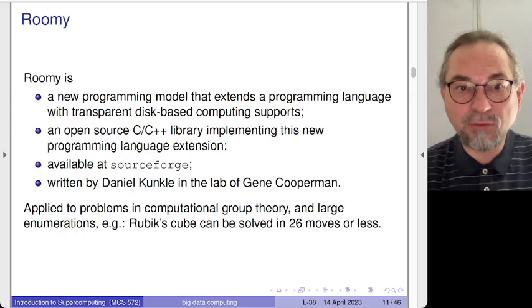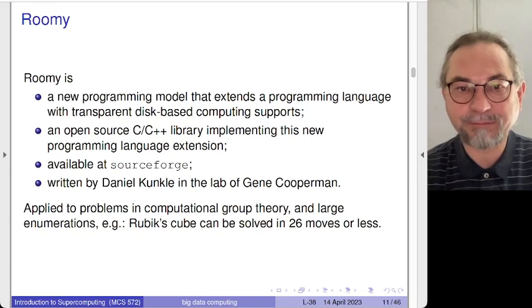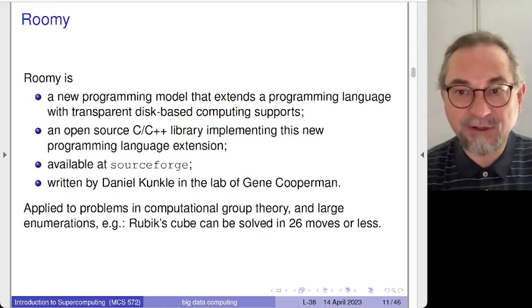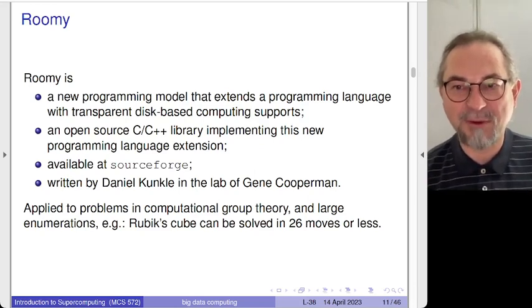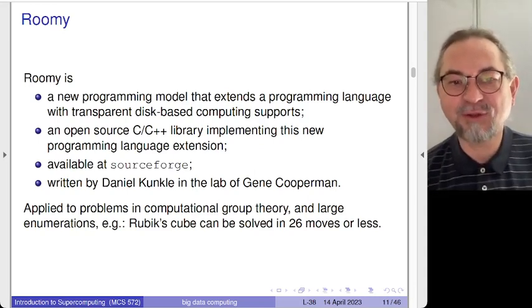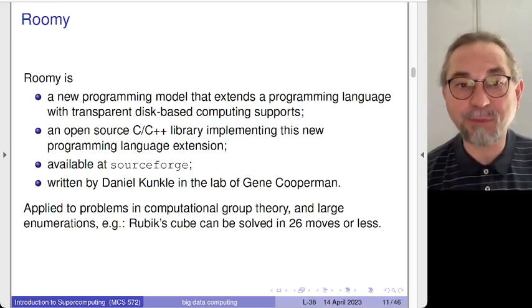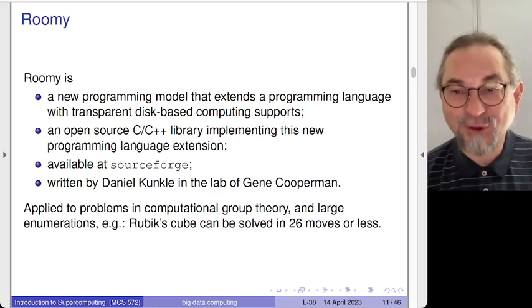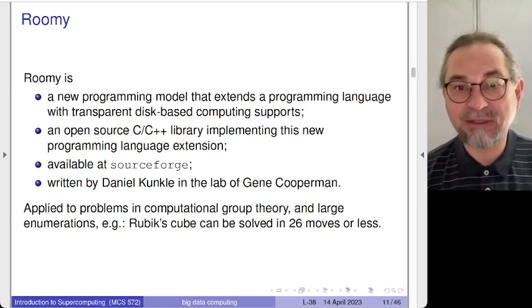ROOMY is an open source C and C++ library, publicly available at a SourceForge link, written by PhD student Daniel Kunkel of the lab of Gene Cooperman. In the literature you can see the application to the Rubik's Cube — the study of these puzzles includes the so-called god number: imagine a super being, how many moves would that super being need to solve the Rubik's Cube?